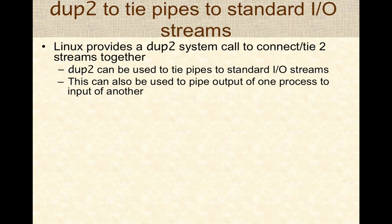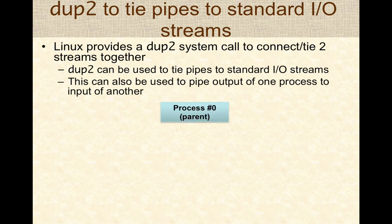Now that we know how to use basic anonymous pipes, let's look at how we can use pipes to redirect input and output for two different programs. Linux provides a dup2 system call that can be used to connect or tie two streams with pipes. dup2 can tie pipes to standard input-output streams — which is basically cin and cout — and can pipe the output of one process to the input of another. For example, a parent process that wants to establish pipes between two child processes would first create a pipe so that every child it forks has information about the pipe created.